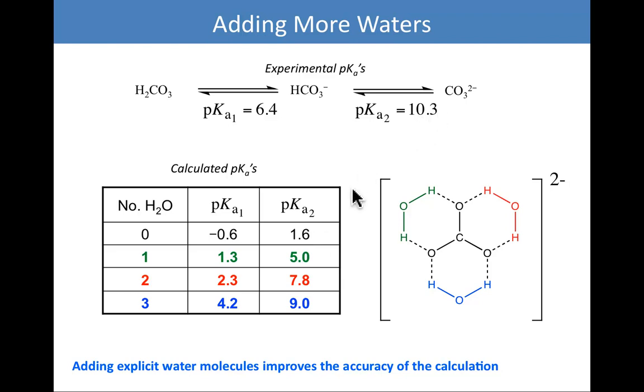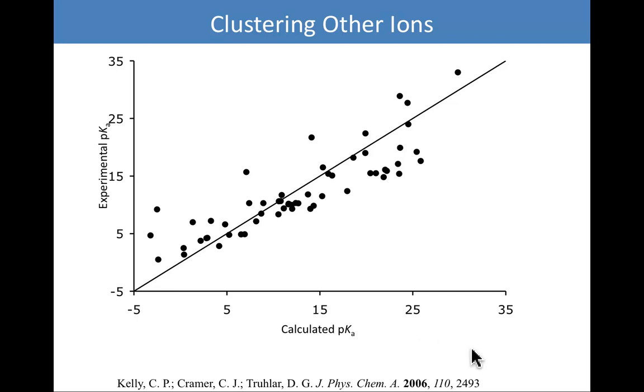When we introduce the first water of solvation, there is an improvement in both pKas, but they're still quite far from experiment. If you bring in a second water of solvation, there's continued improvement. By the time you allow three waters of solvation, we're up to 2 pKa unit error and a little bit more than 1 pKa unit error. Another example of improving the accuracy with clustering.